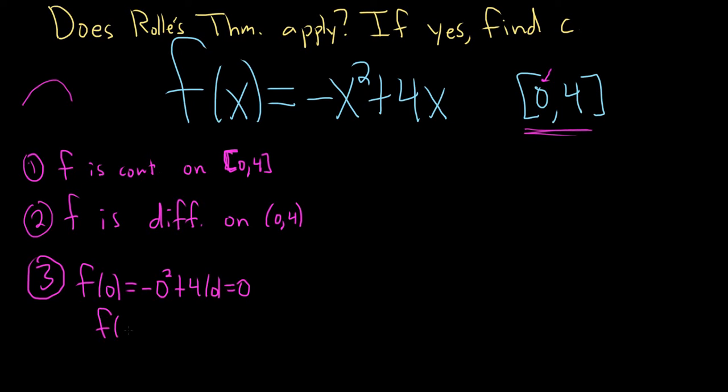And f(4) is going to be negative 4 squared plus 4 times 4. So this is going to be negative 16 plus 16. Awesome. So it's 0. So they're both the same. So f(0) is equal to f(4).